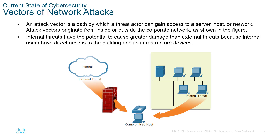There are two main attack vectors targeting a victim: internal threat and external threat. Internal threats are something inside the network targeting the compromised host or victim. An external attack is coming from outside the network, like the internet, for example.